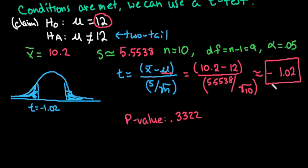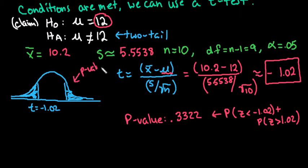This is our standardized test statistic which is less than two standard deviations from the mean, which means it's typical. The p-value here is the probability that my z-score is less than negative 1.02 plus the probability that z is greater than 1.02. Since it's a two-tail test, it's the combination of both of them.